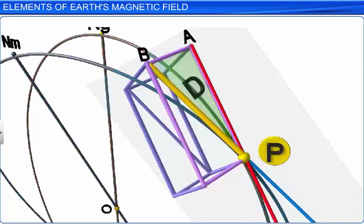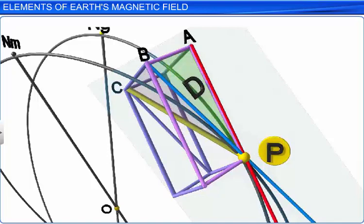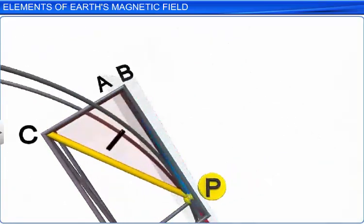The length of the line PB to some scale represents the magnitude of the horizontal component HE of the Earth's magnetic field at the point P. Rotate the line PB in the vertical plane such that it touches the parallelepiped at C. This angle of rotation is the angle of dip I at the point P. The line PC represents the magnitude and direction of the total magnetic field BE at the point P.